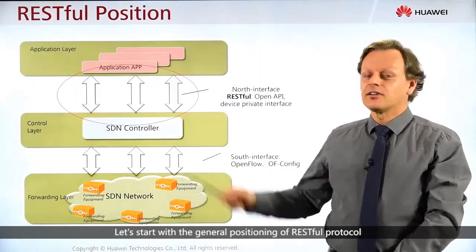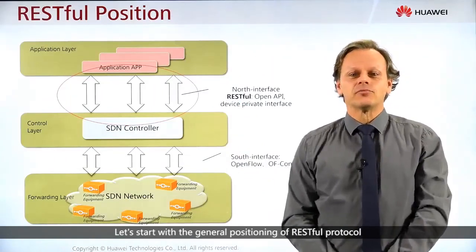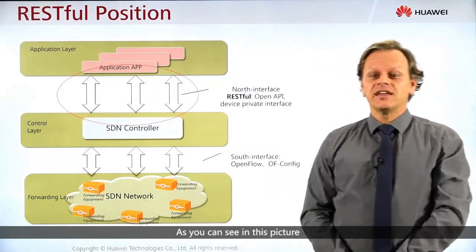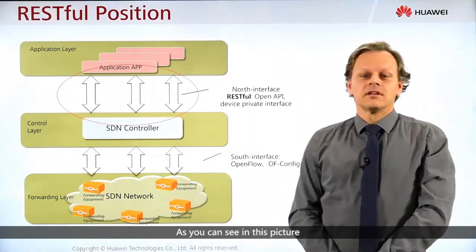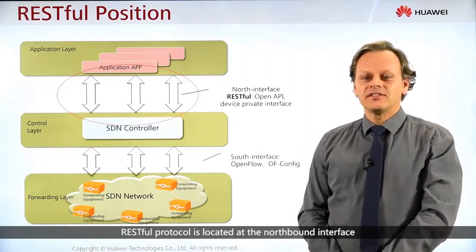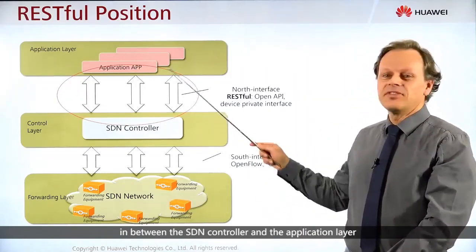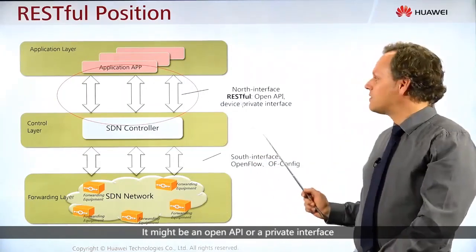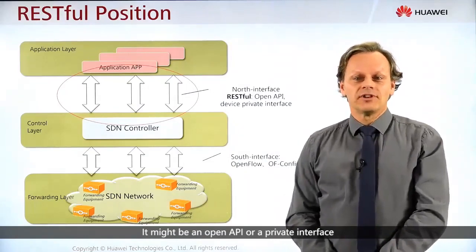Let's start with a general positioning of RESTful protocol. As you can see in this picture, RESTful protocol is located at the northbound interface in between the SDN controller and the application layer. It might be an open API or a private interface.